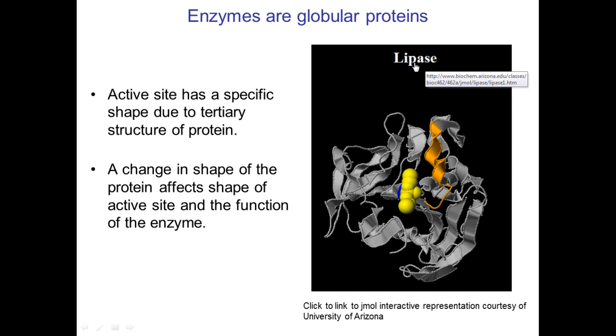This diagram here shows us an example of an enzyme lipase, so lipase breaks down fats. The active site of this is specifically down to the tertiary structure of the protein. It is the folding in from the secondary structure that gives this a very specific shape.